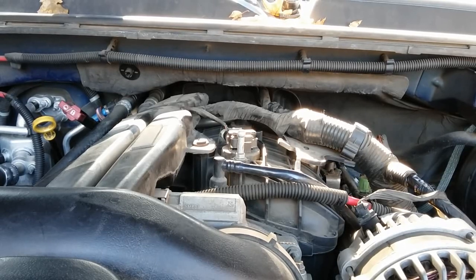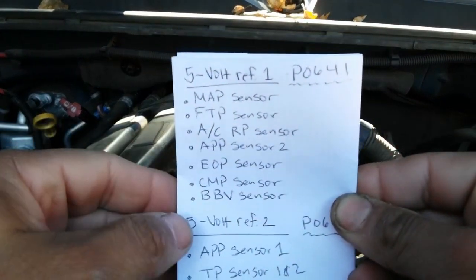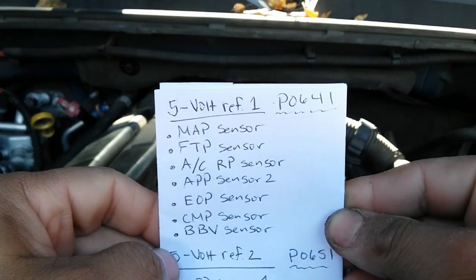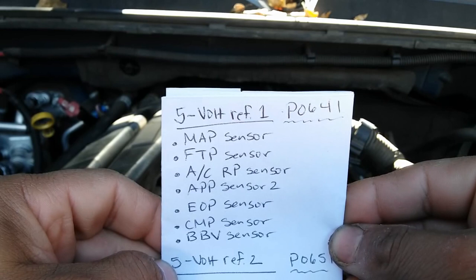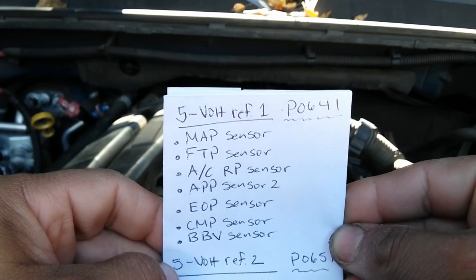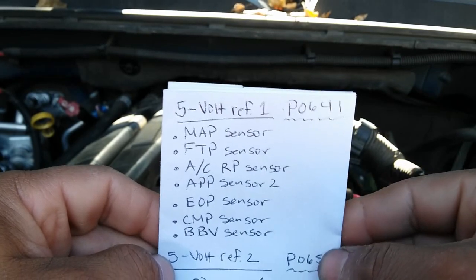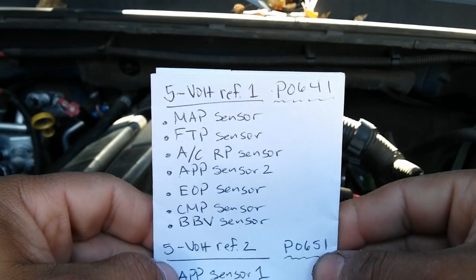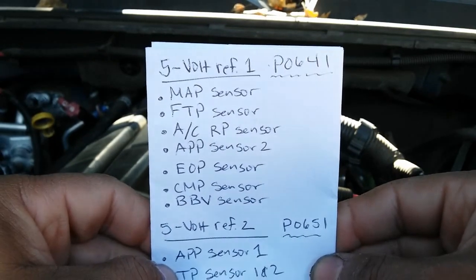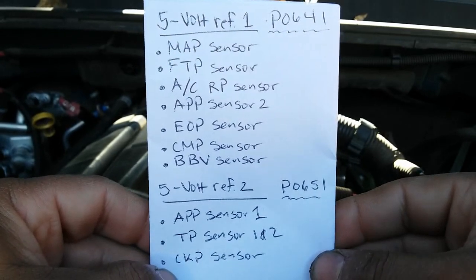These are the sensors that belong to the 5-volt reference one, which will trigger P0641. The first one is a MAP sensor, the second is a fuel tank pressure sensor, the third is the AC refrigerant pressure sensor, the fourth is the accelerator pedal position sensor circuit two, the fifth is the engine oil pressure sensor, the sixth is the camshaft position sensor, and the seventh is the brake booster vacuum sensor.